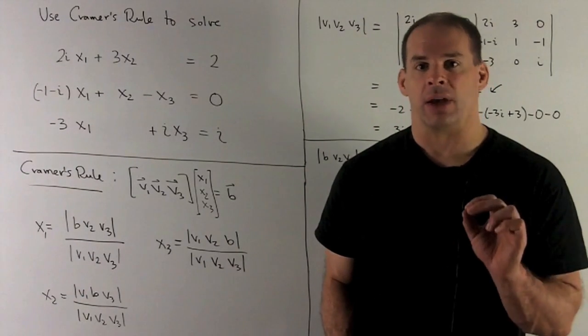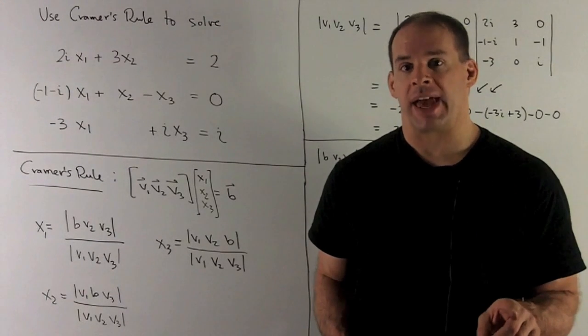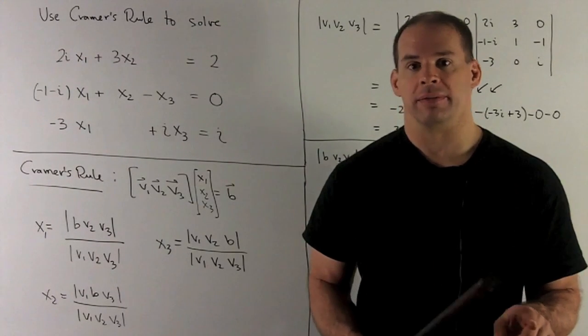Then we take the determinant of the matrix B, V2, V3. I get that number. I divide by the determinant of our matrix A, which is just V1, V2, V3.